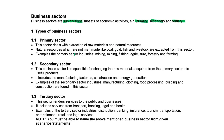The big three — the primary sector deals with the extraction of raw materials and natural resources, which are not manmade, like coal, gold, fish and livestock. These are natural resources, not synthetic, not created by humans — purely natural.